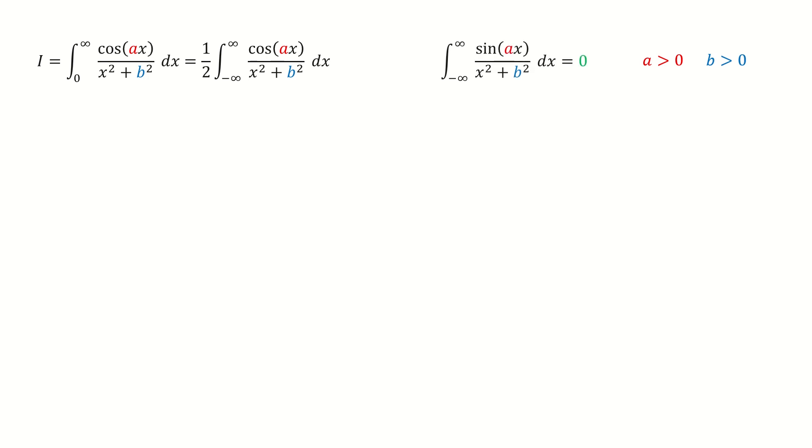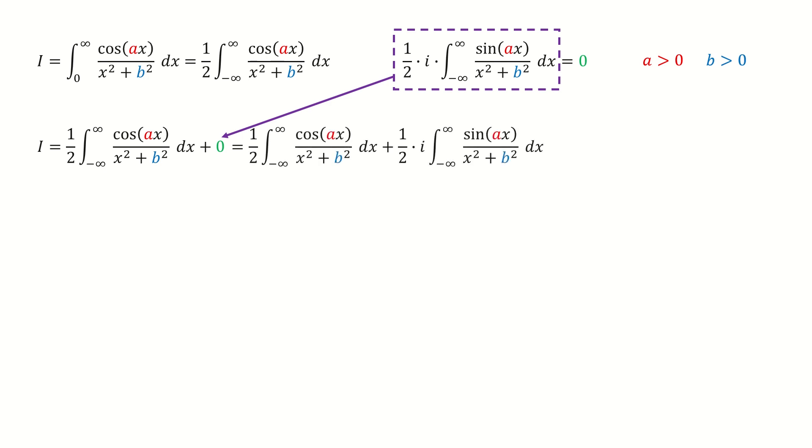And note for this integral, because the sine function is odd, so the integral function is odd, so the integral is 0. And then we multiply half i, so it still equals to 0. And then we write our original problem into this way, by adding this trivial 0. And then we replace this trivial 0 by this term.